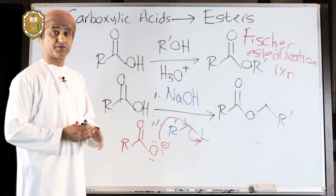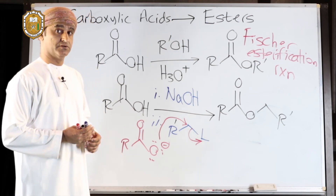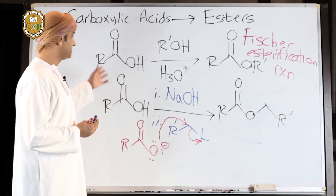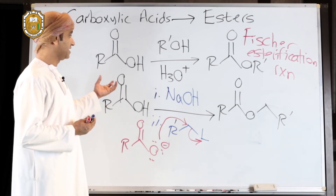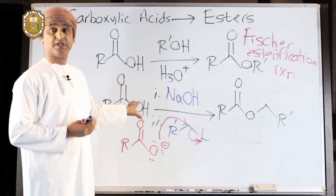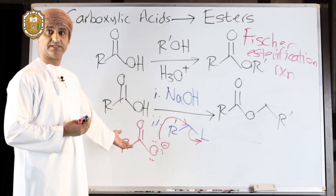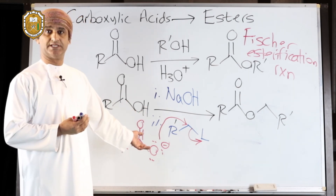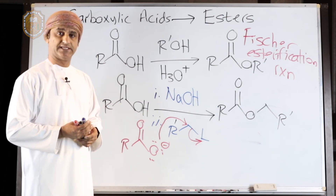So there are two methods we have learned for the conversion of carboxylic acids into esters. The first is the Fischer esterification reaction — a very important, old, and reliable method that employs an alcohol and an acid. The second method involves transforming the carboxylic acid into the corresponding carboxylate by reaction with a mild base, followed by reaction of the carboxylate ion with an electrophile such as an alkyl halide to give the corresponding ester.